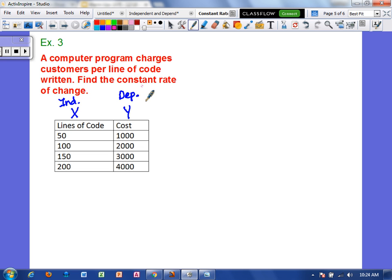So I'm going to find the change in y. So from 1,000 to 2,000 that changed by another 1,000. From 2,000 to 3,000 that changed by another 1,000. And from 3,000 to 4,000 it changed by another 1,000. Now let's find our change in x. From 50 to 100 that changed by 50. From 100 to 150 it also changed by 50. And from 150 to 200 it changed by 50.